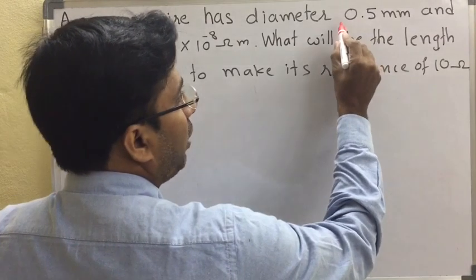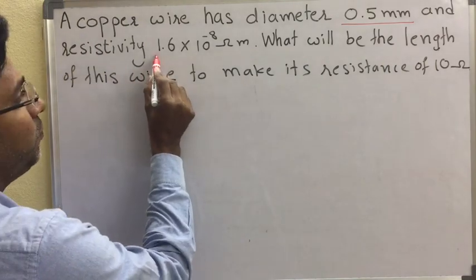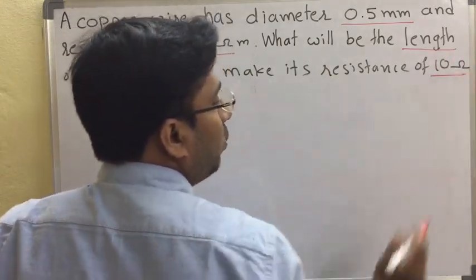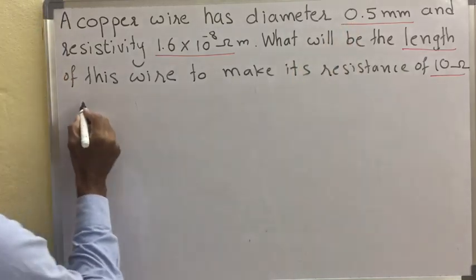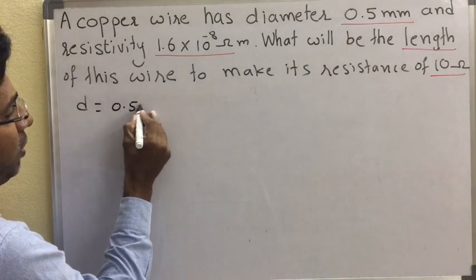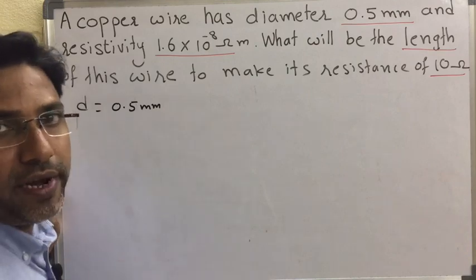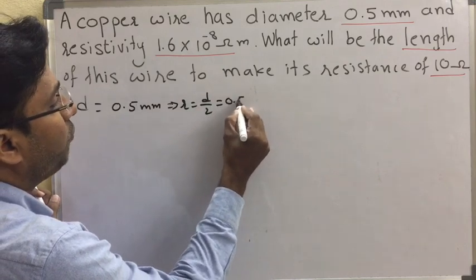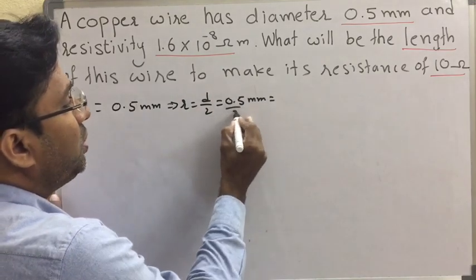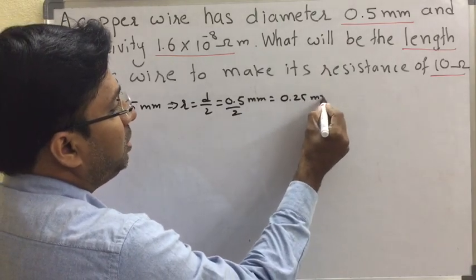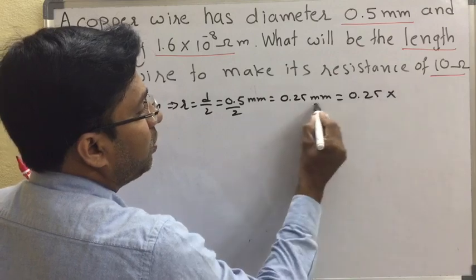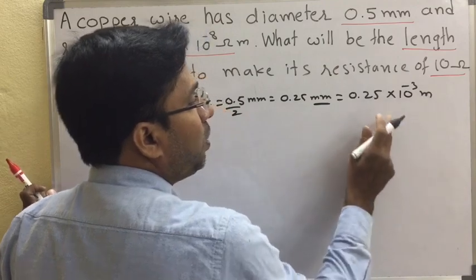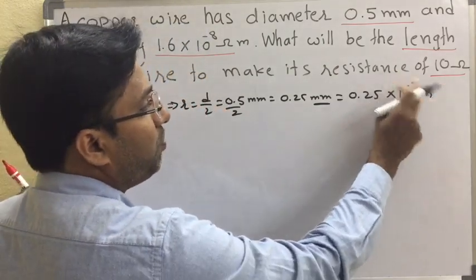Let us see one more problem. A copper wire has a diameter of 0.5 millimeter and resistivity 1.6 into 10 power of minus 8 ohm meter. What will be the length of this wire if resistance is 10 ohms? Diameter d equal to 0.5 millimeter. Since diameter is given, radius is half of diameter: 0.5 divided by 2 equals 0.25 millimeter, which converts to 0.25 into 10 power of minus 3 meters.